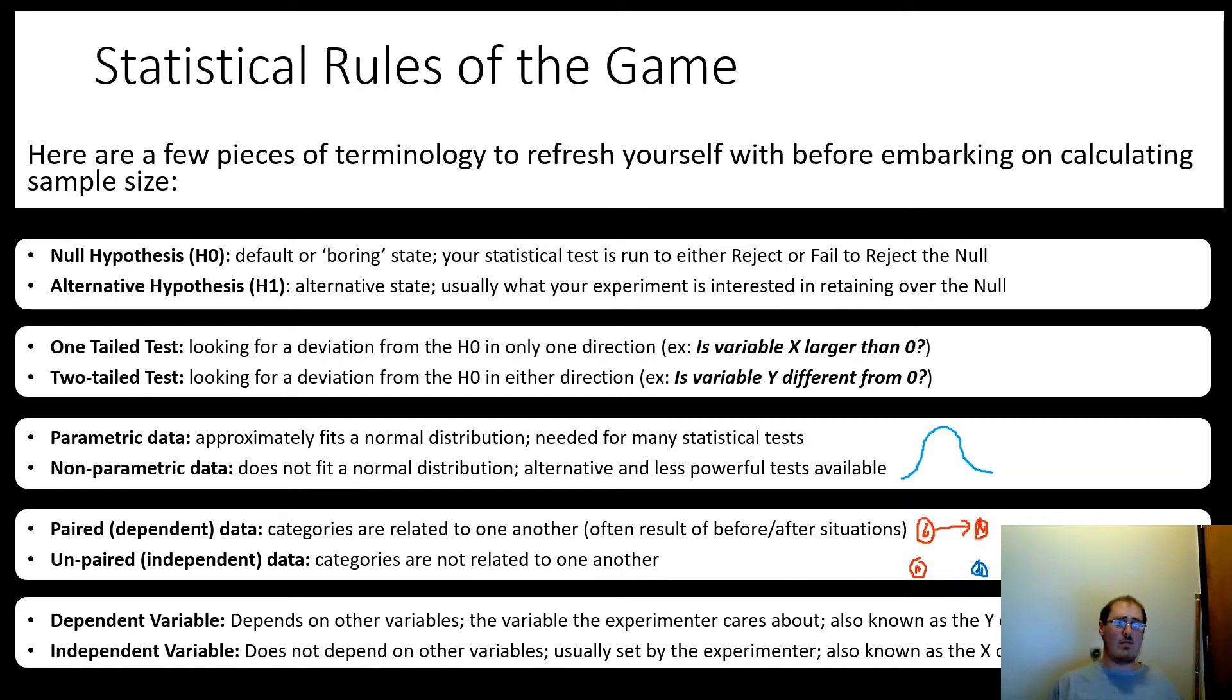Then an independent variable doesn't depend on other variables. And it's usually set by the experimenter. And it's usually known as the X or predictor variable. And some tests have multiple X, multiple predictor variables. So whether or not those mice got the drug or the control would be a predictor variable, independent variable.